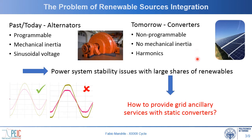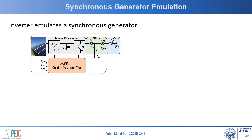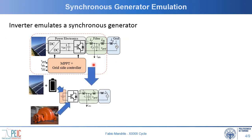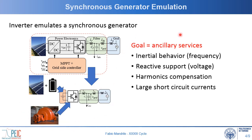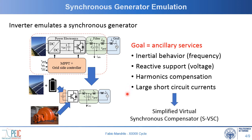So, the question is how to provide grid ancillary services to guarantee such stability using static converters. Here comes the idea of making an inverter emulate a synchronous generator. We take a grid-connected converter and transform it into a virtual synchronous generator by control means. The goal is to provide ancillary services to the grid: inertial behavior to support the frequency, reactive support to support the voltage, harmonic compensation, and large short-circuit current injection. Therefore, we proposed the so-called simplified virtual synchronous compensator, or SVSC.